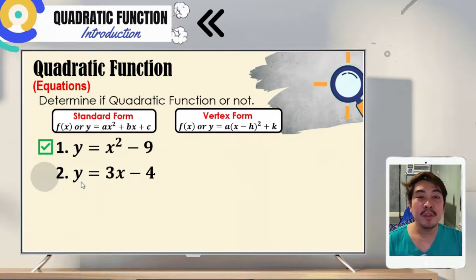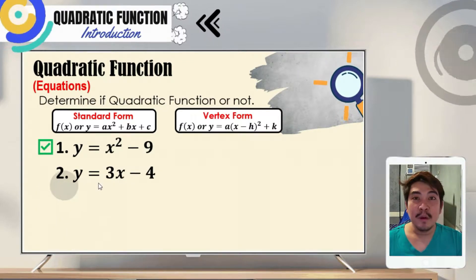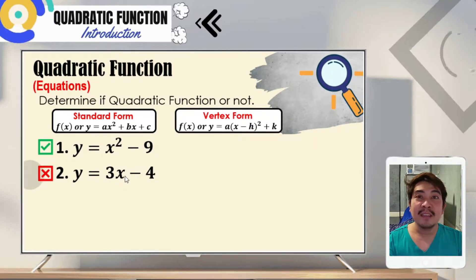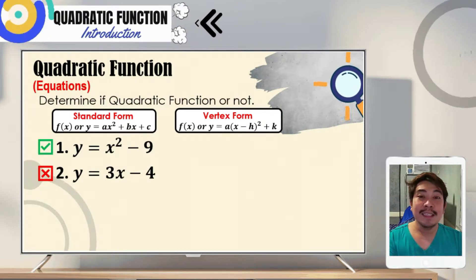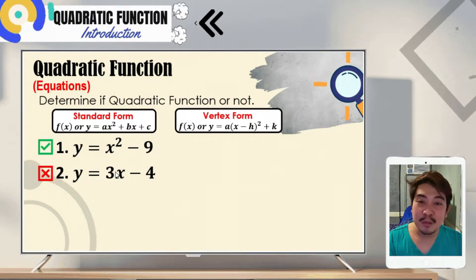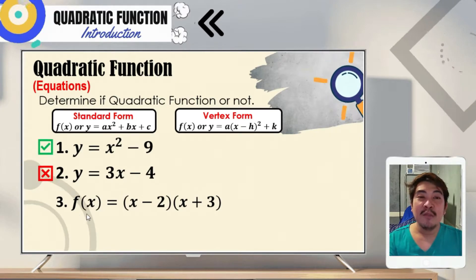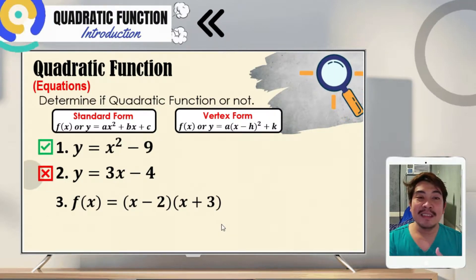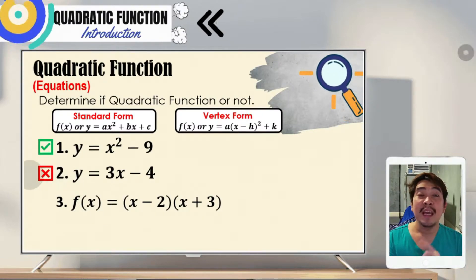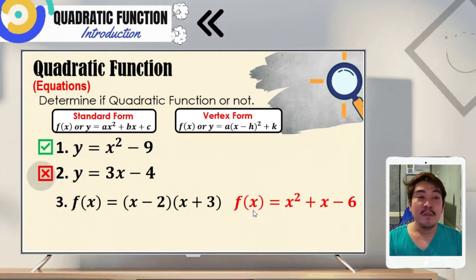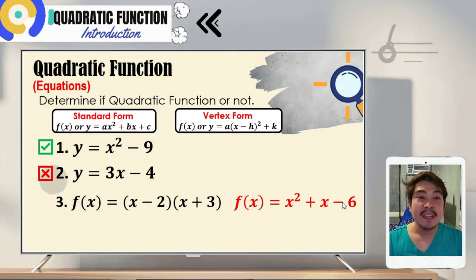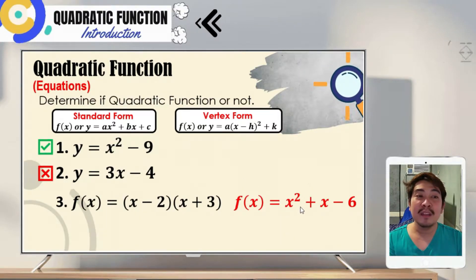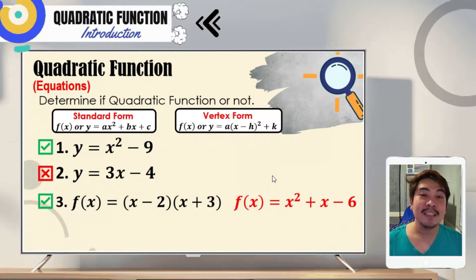For number 2, we are given y is equal to 3x minus 4. This is not a quadratic function since the highest exponent of x is 1. We can call this a linear function. For number 3, we are given f of x is equal to x minus 2 times x plus 3. At first we may say this is not quadratic, but applying the FOIL method, we obtain f of x is equal to x squared plus x minus 6, which is the standard form. The highest exponent is 2, so it is a quadratic function.